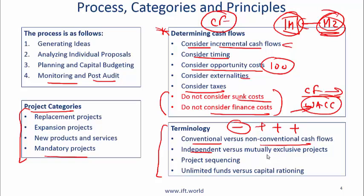Independent versus mutually exclusive projects. An independent project is a project where you decide whether or not to do that project on a one-off basis — you don't compare it with other projects. With mutually exclusive projects, if you have two projects A and B which are mutually exclusive, then it makes sense to only do one. Project sequencing means that at times you want to do a project first and then another project after that.